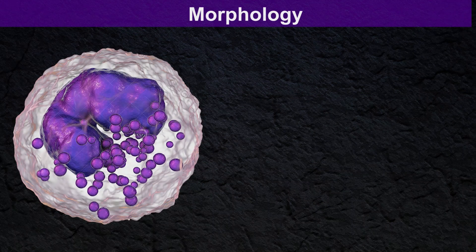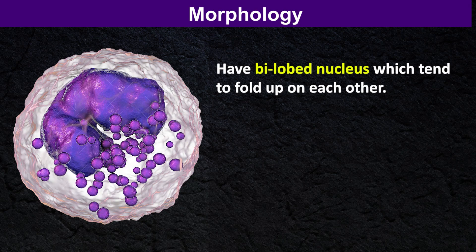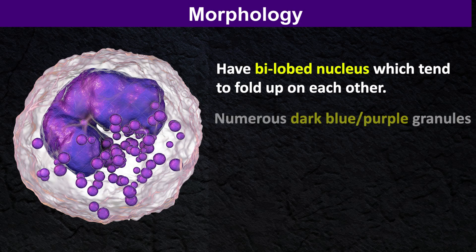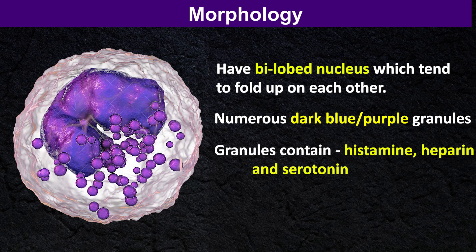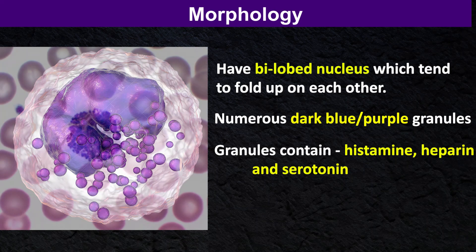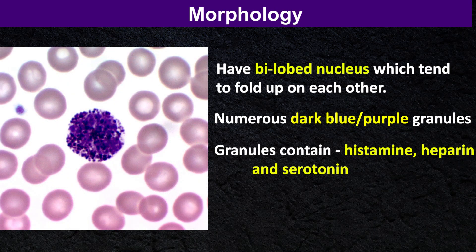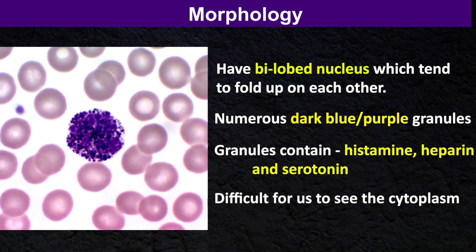Regarding morphology, basophils have a bilobed nucleus which tends to fold up on each other. They also have numerous dark blue to purple granules which vary in size. These granules contain histamine, heparin, and serotonin. As there are so many granules, it is difficult to see the cytoplasm.